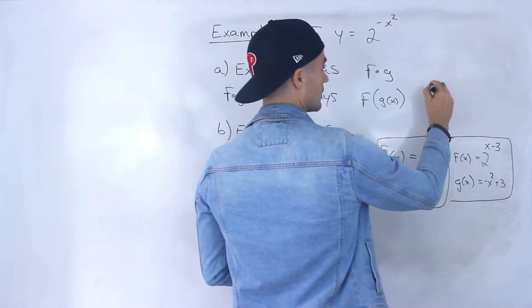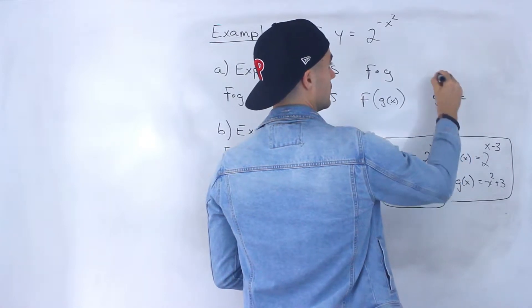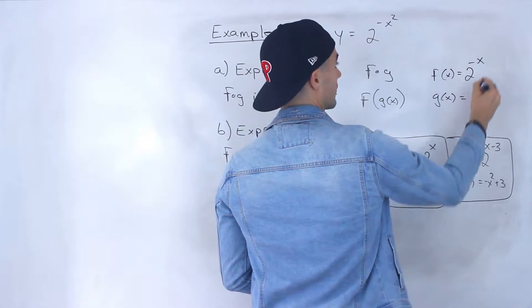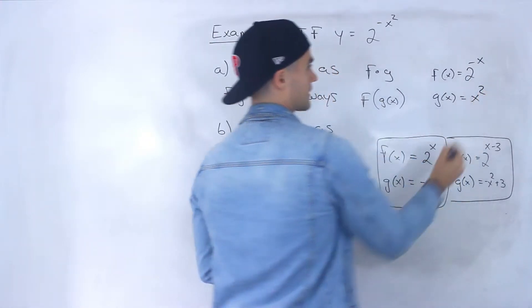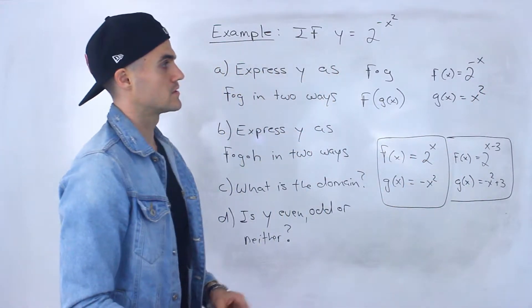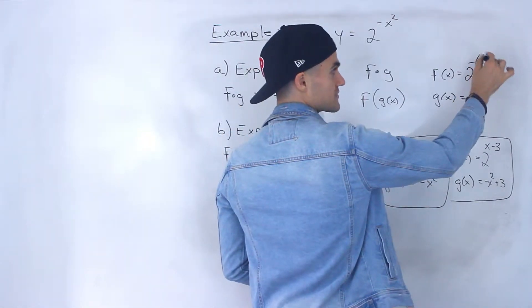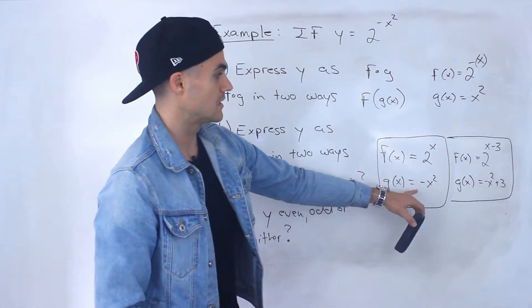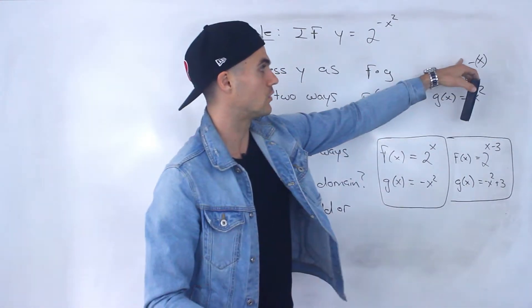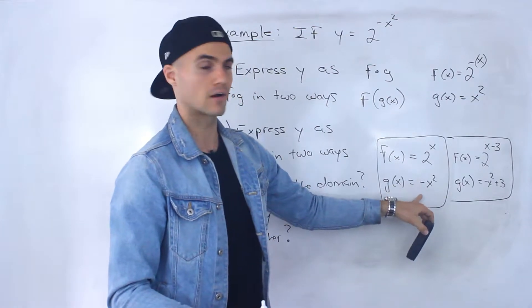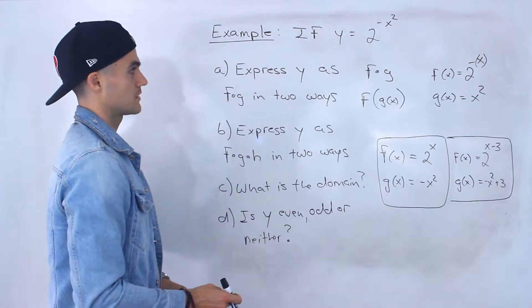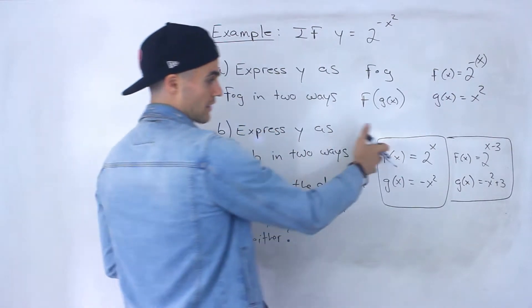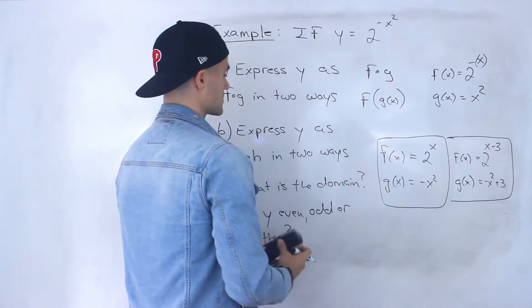Another way — actually I just thought of this — this would be pretty simple: if we let f of x be 2 to the power of negative x, then g of x would just have to be x squared. So we'd be plugging in x squared for this x value. That would be in brackets, so we'd end up with 2 to the power of negative x squared — very similar to the first way, but instead the negative we put over here instead of over there. So that's another possibility. That's how we can express y as f of g of x, where f of x and g of x are these different possibilities.